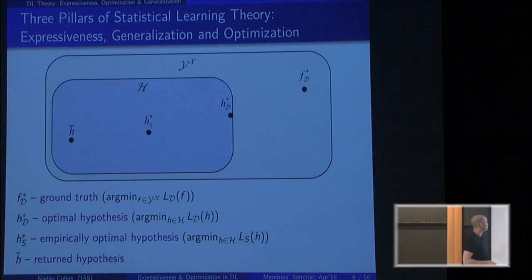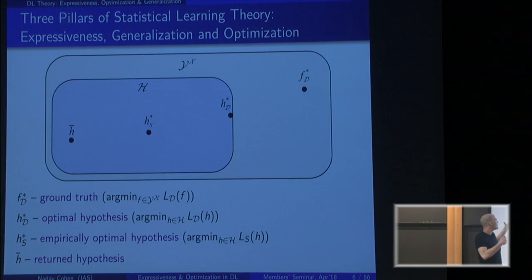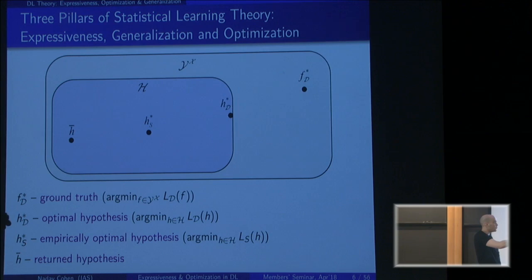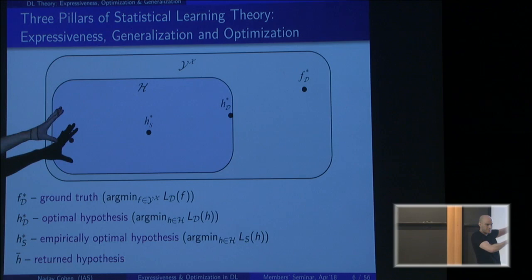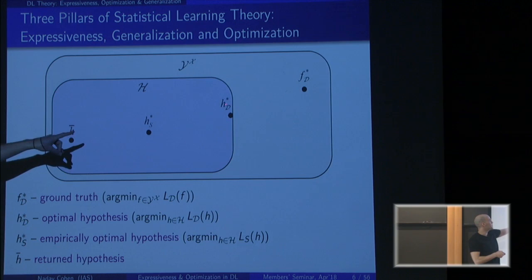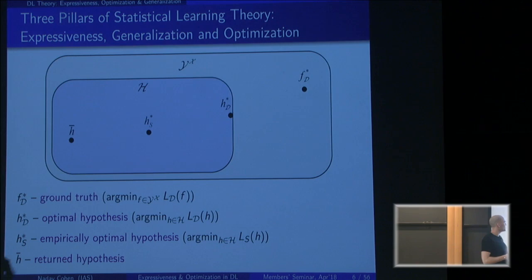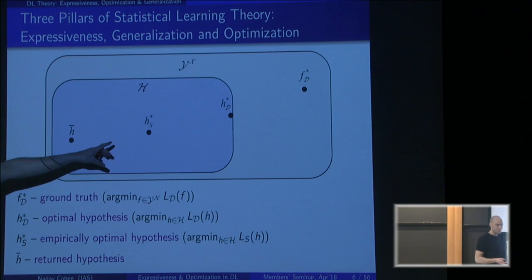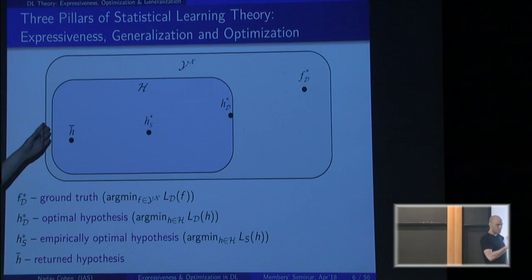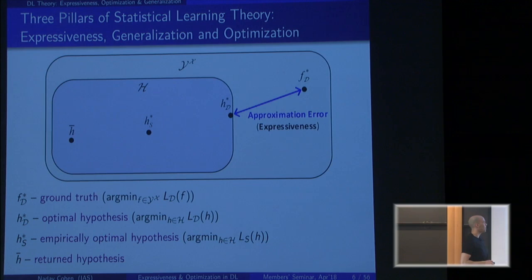There are three fundamental factors that determine the quality of the hypothesis we return. In gray is the set of all functions from instances to labels; in blue is our hypothesis space, fixed in advance. There exists some function optimal over the whole distribution D, and inside our hypothesis space there is some hypothesis that minimizes the population loss. What we can find — setting computational issues aside — is the hypothesis that minimizes the empirical loss, h-bar. There are three sources of error.